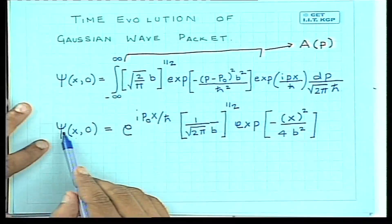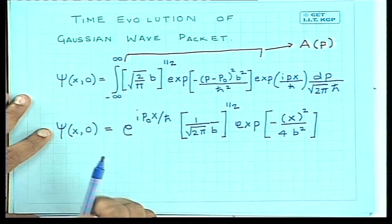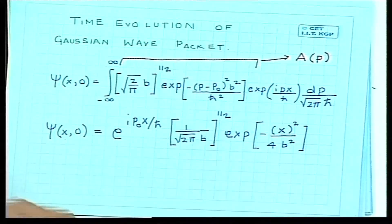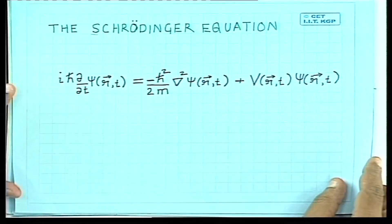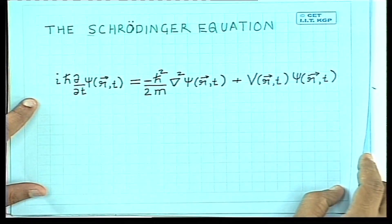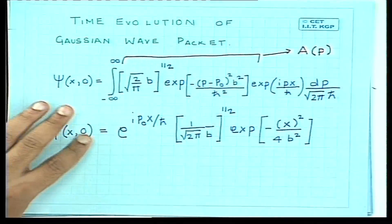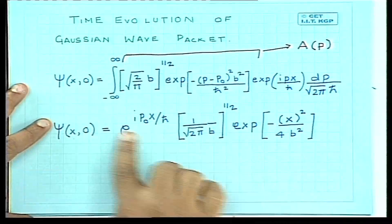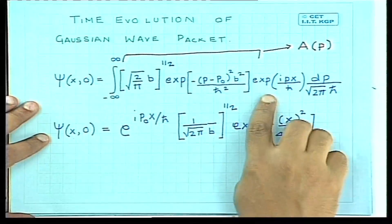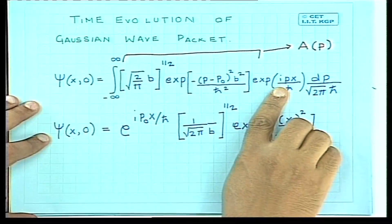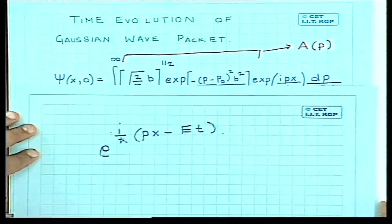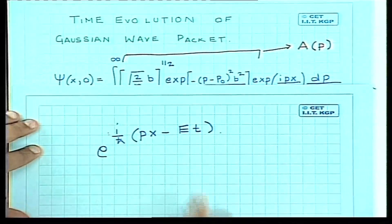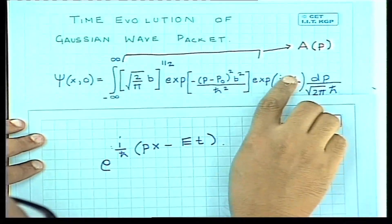We want to study the time evolution of this wave function. One possibility is to use it as the initial condition in the Schrödinger equation in one dimension, with the condition that at t = 0 we have this wave function. We know the time evolution of each momentum wave: for each fixed value of p, it oscillates with angular frequency E/ℏ.